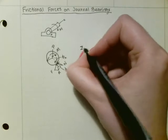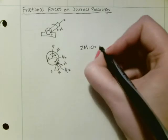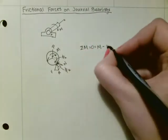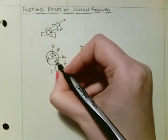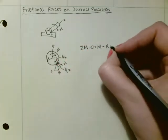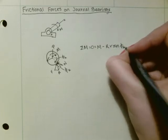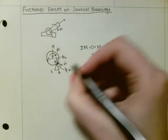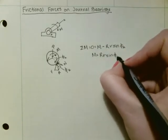If we were to sum the moments about the center, it would be equal to zero. We would have our moment M minus R — the radius is R — and then sine of phi_k would give us the perpendicular distance, so R sine(phi_k). Such that our moment would be equal to our reactionary force R times the radius R times sine of phi_k.